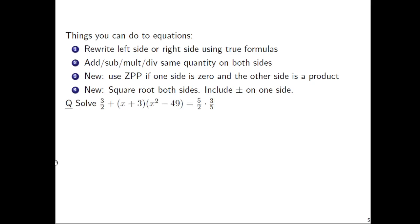So let's actually see all four of these types of things you can do all in one problem. So let's solve this equation. It's an equation because of the equal sign in the middle. Okay, this equation is 3/2 + (x + 3)(x² - 49) = 5/2 × 3/5. Lots of things going on here, I get that. But first, let's do the first type of action. Simplify either the left or the right side using true formulas.